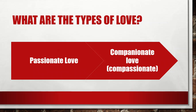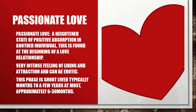What are the types of love? Passionate love and companionate love, also known as compassionate love. Passionate love is a heightened state of positive absorption in another individual. It is found at the beginning of a romantic relationship — a very intense feeling of liking and attraction that can be erotic. But this phase is short-lived, typically months to a few years, approximately 6 to 30 months at most.